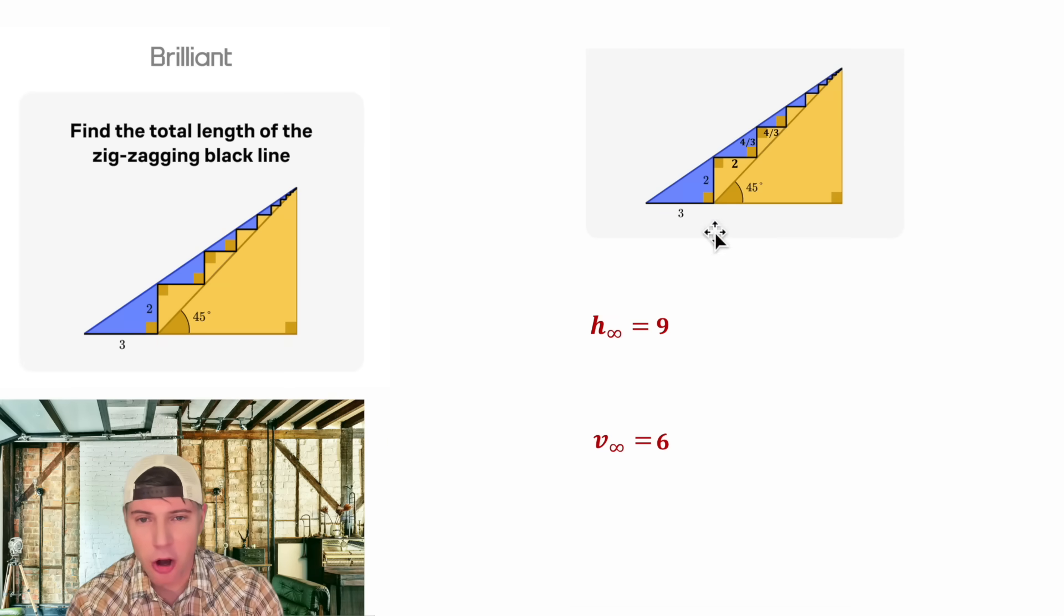So our horizontal sum, all of these added up forever going on to infinity will equal exactly nine. And all these vertical ones added up forever will give us six.